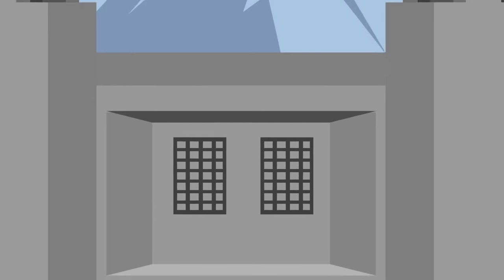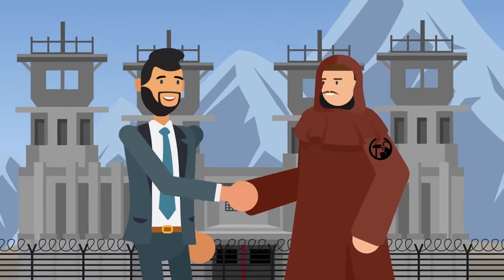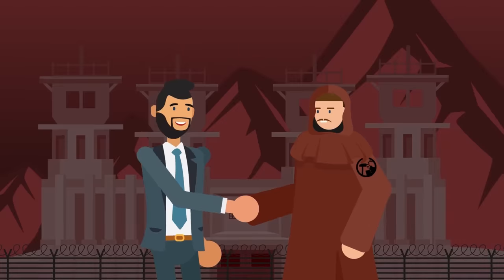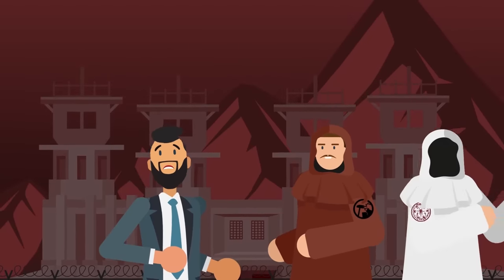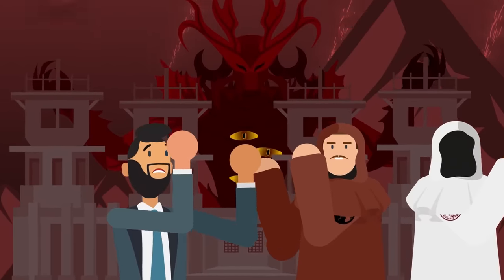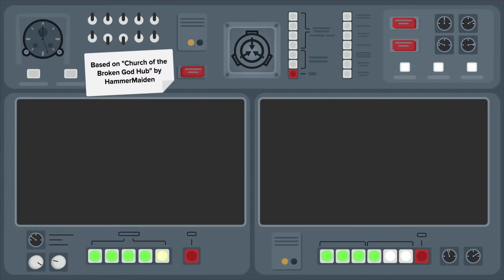However, if certain prophecies are to be believed, the relationship between the Foundation and the Church won't remain frosty forever. One day, perhaps they'll even stand metal to fleshy shoulder beside the Sarkis too, against a threat far more dangerous than all of them combined.